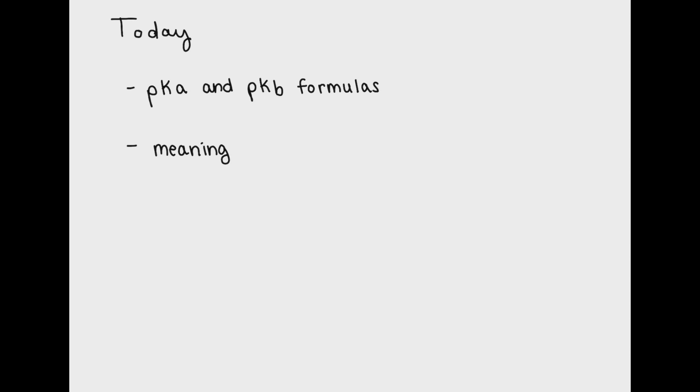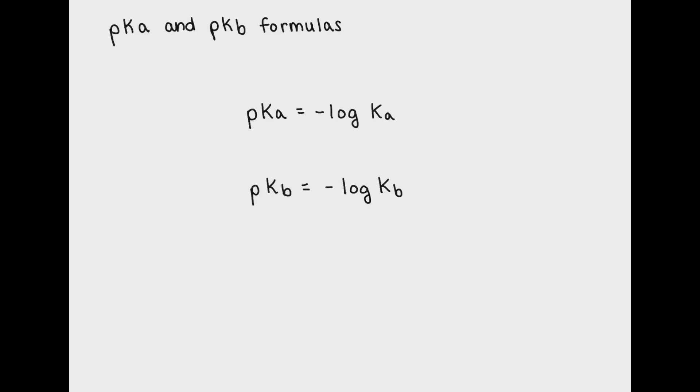The formulas of pKa and pKb are very similar to pH and pOH. pKa equals the negative log of Ka, while pKb equals the negative log of Kb.